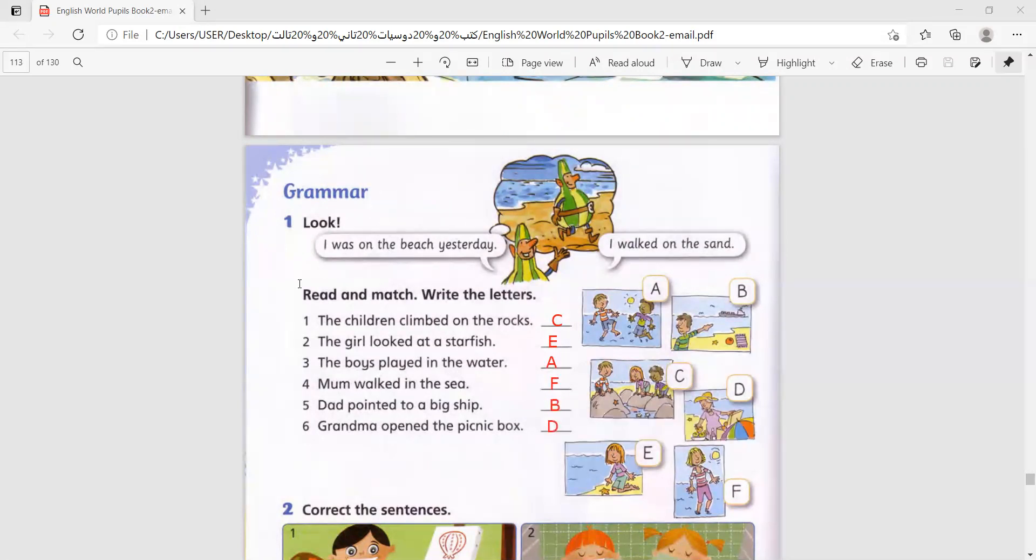Let's take a look at this sentence. I was on the beach. I walked on the sand. Was. We use was to talk about the past, and for the present, we use is, am, and are.